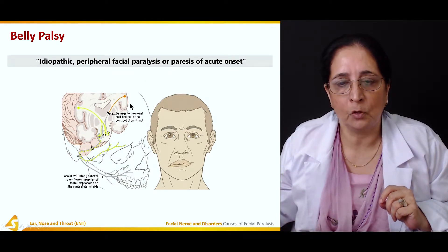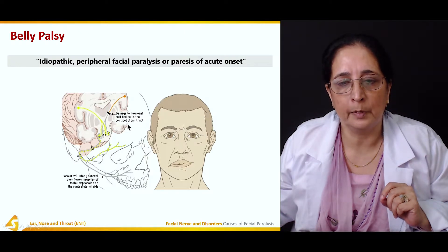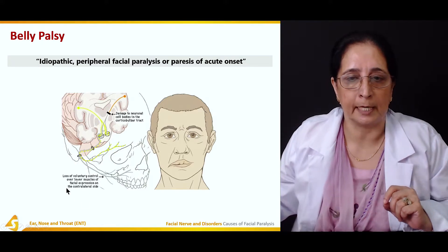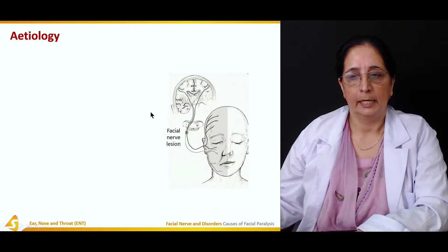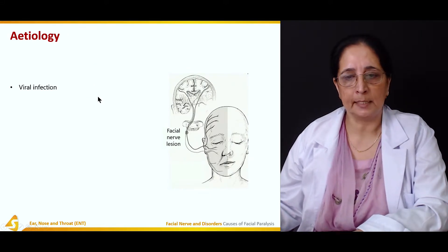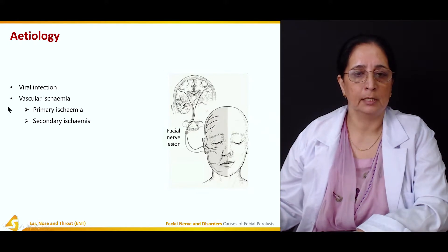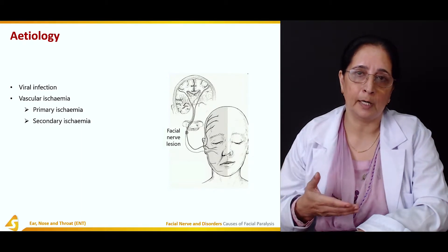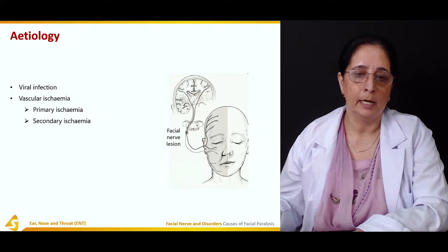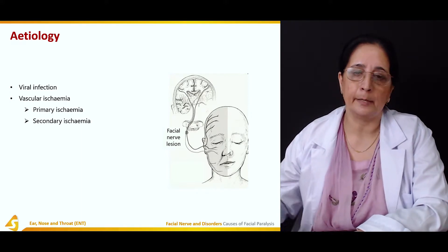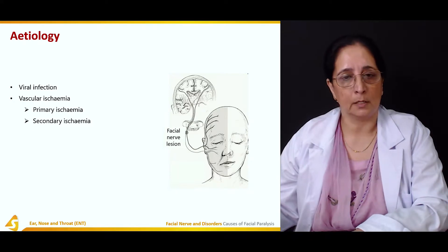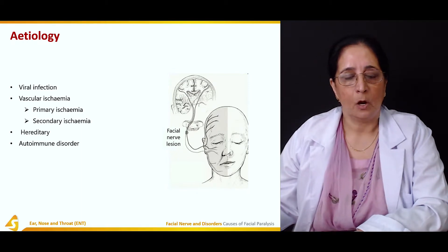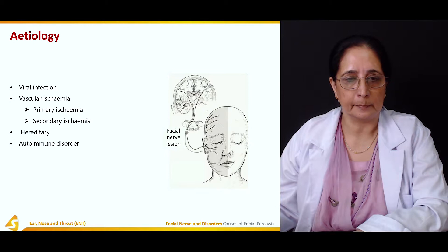This involves damage to neuronal cell bodies in the corticobulbar tract, which can affect the muscles on the opposite side. The etiology of Bell's palsy includes viral infections, vascular ischemia with decreased blood and oxygen supply — which can be primary or secondary — hereditary factors, and autoimmune disorders.